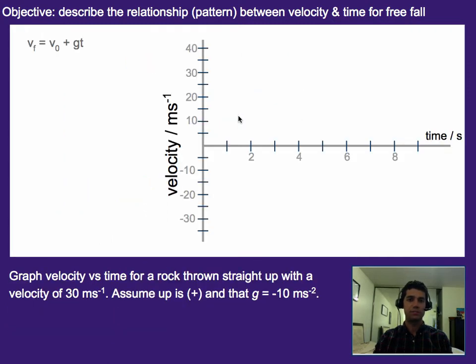So to come up with these graphs, we're just going to be plugging into final velocity equals initial velocity plus gravity times time over and over again. So this is literally what we just looked at, the graph of velocity versus time for a rock thrown straight up with a velocity of 30 meters per second. In this one we're going to assume up is positive and that gravity is negative 10 meters per second squared, just to make life a little easier. So I'm going to make a t-chart just so I can plot my values really easily.